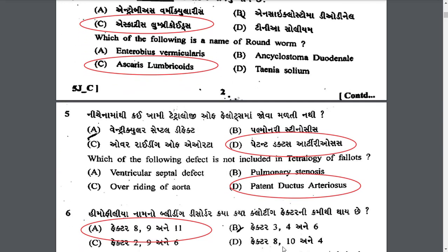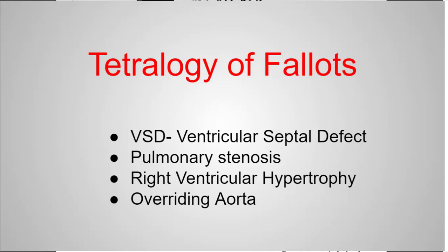Which of the following defects is not included in tetralogy of Fallot? The answer is D — Patent ductus arteriosus. Tetralogy of Fallot includes four conditions: VSD (ventricular septal defect), pulmonary stenosis, right ventricular hypertrophy, and overriding aorta. Patent ductus arteriosus is not part of tetralogy of Fallot.